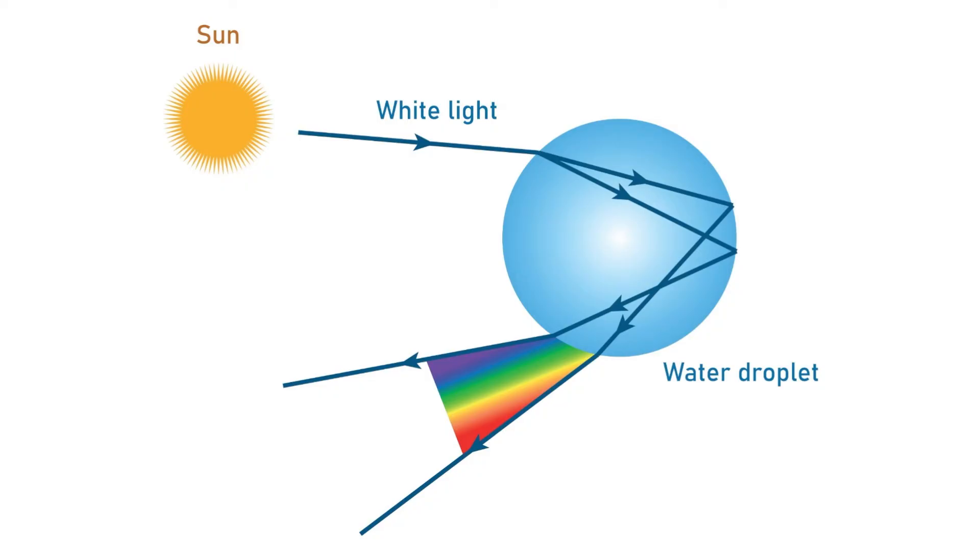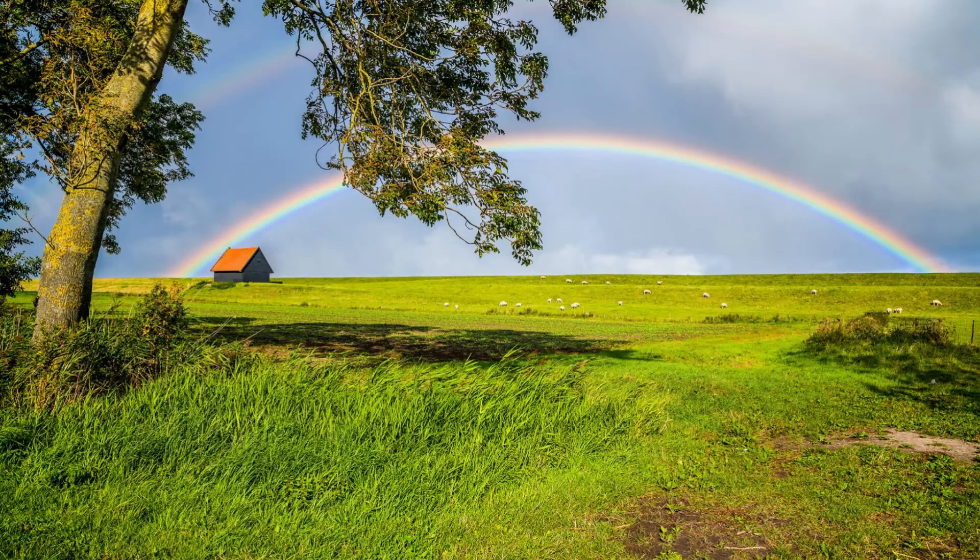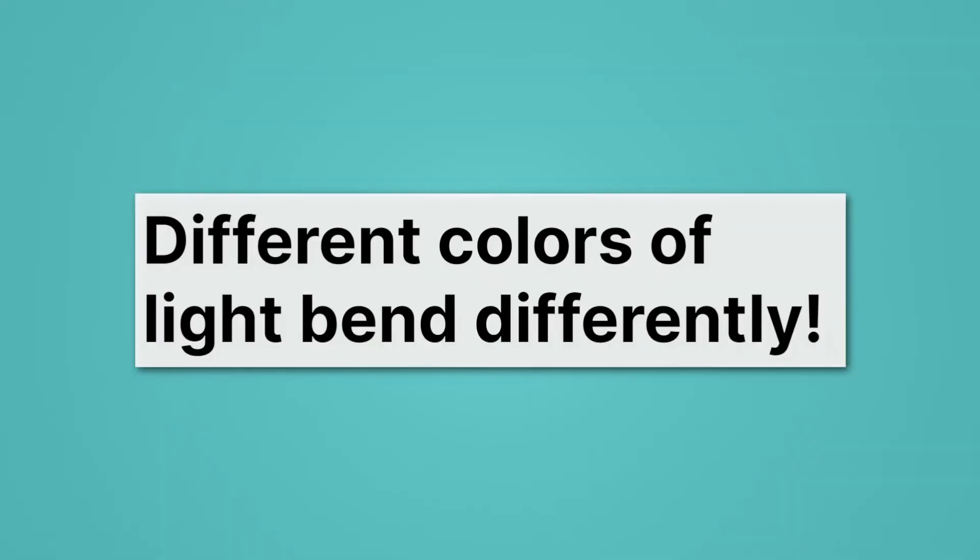When it comes out, though, we have all the different colors. Why is this? Well, it's because different colors turn out to move at different speeds and bend different amounts. This bending of different colors at different angles gives rise to the rainbow. Pretty epic. So different colors of light bend differently.